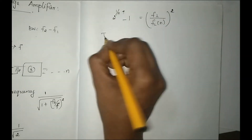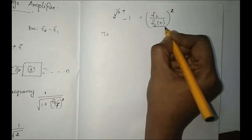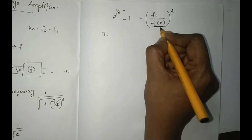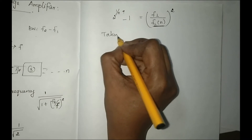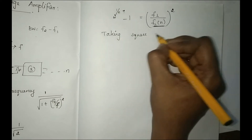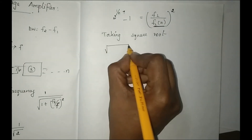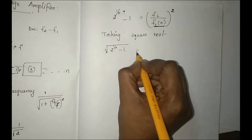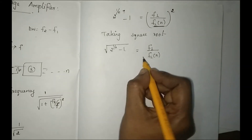Again, taking the square — the square cancels. We are going to consider the 3dB frequency and simplify the expression step by step.